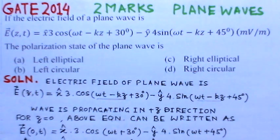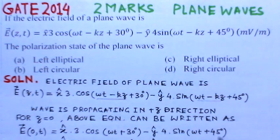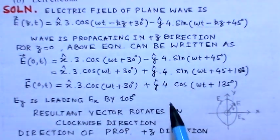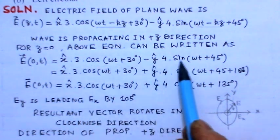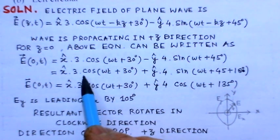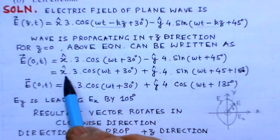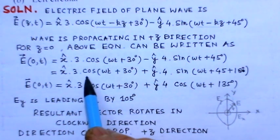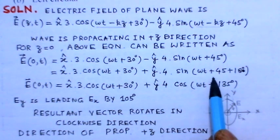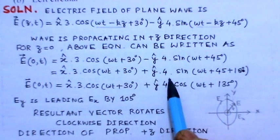We evaluate this equation at z = 0, so the wave equation becomes E = x̂ · 3cos(ωt + 30°) − ŷ · 4sin(ωt + 45°). To find the phase difference between the x and y components, we need to express both in cosine form.